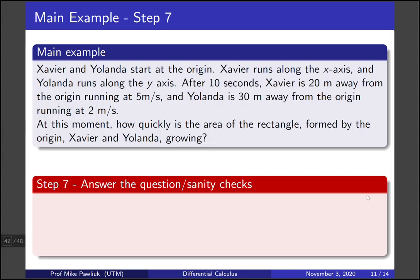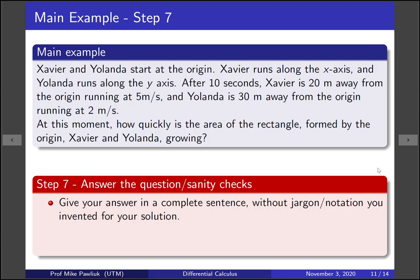The final stage is to actually answer the question and do any sanity checks that are necessary. You should always give your answer in a complete sentence, without using jargon or notation that you invented for the solution. Even though we used the functions x(t) and y(t), they don't show up anywhere in the question statement. We should express our answer in ways that are simple and don't use this extra notation. For example, you might write: at t equals 10 seconds, the area of the rectangle is growing at 190 meters squared per second.